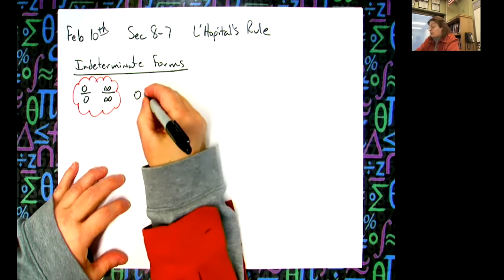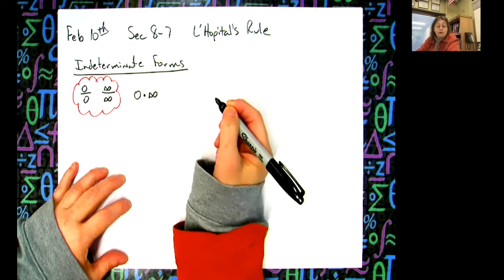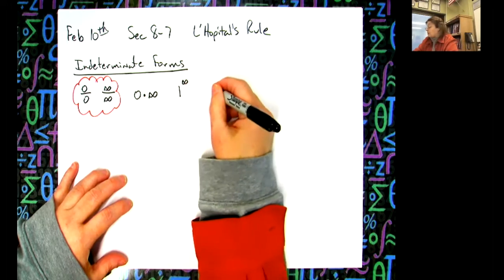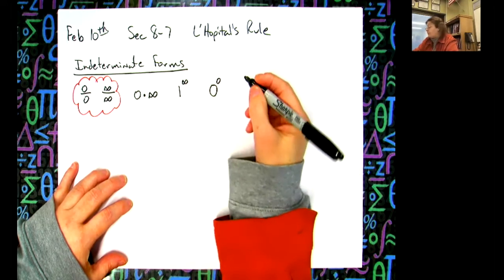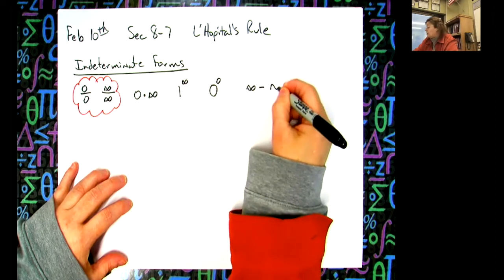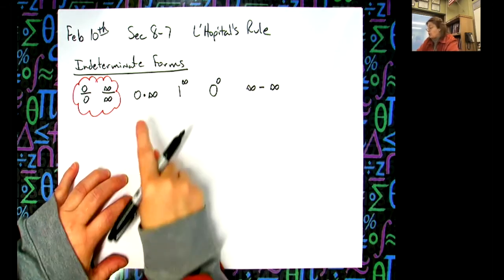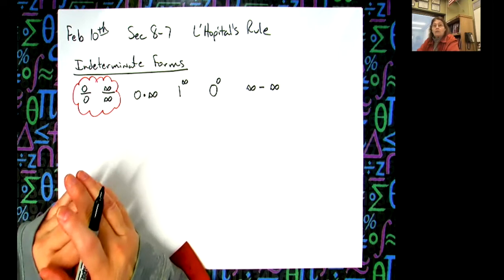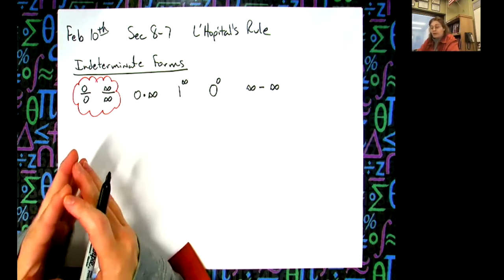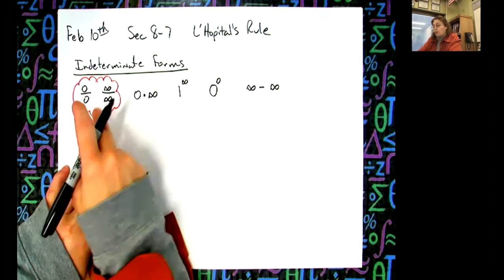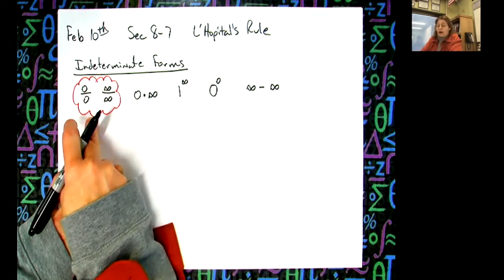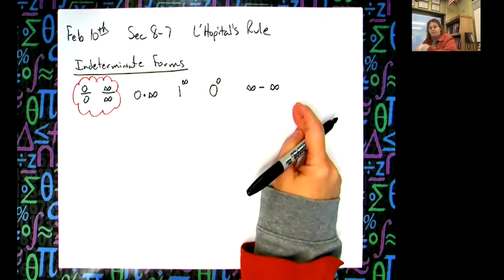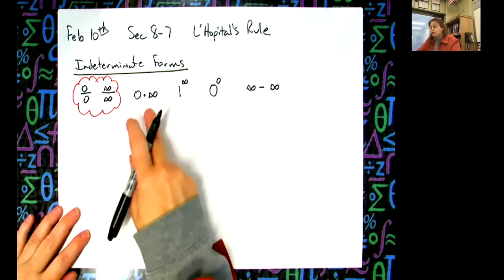Another indeterminate form is zero times infinity. Another one is one raised to the infinity. Another one is zero raised to the zero power. And then infinity minus infinity. So those are the new ones we're going to start to encounter. It was very deliberate — when we did limits to begin with, I made sure to only give you limits with the earlier indeterminate forms. But now, mixed in with all your other limit problems, you will start to see these.